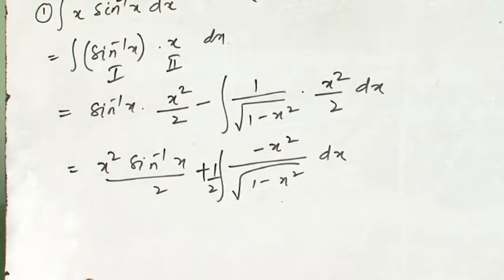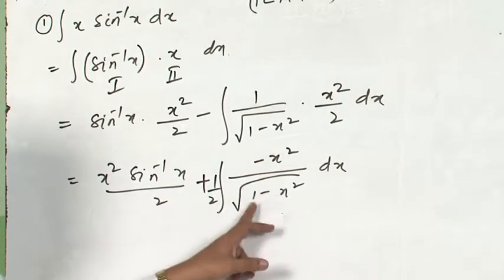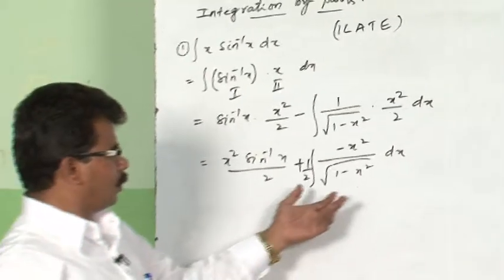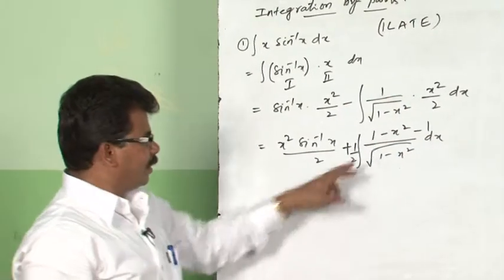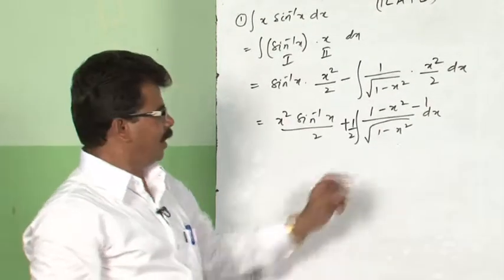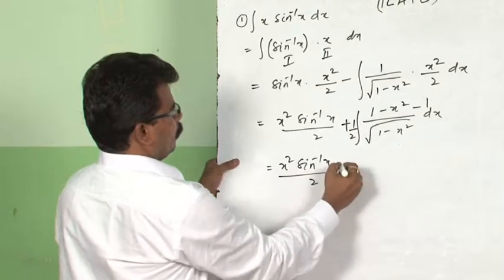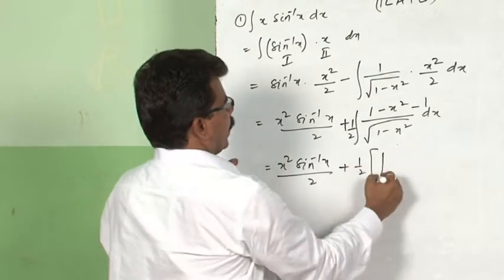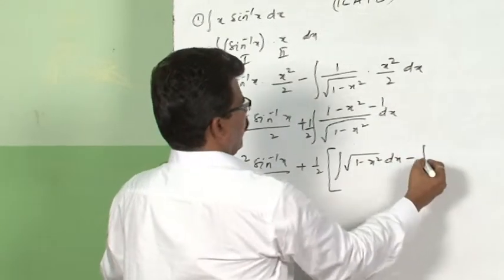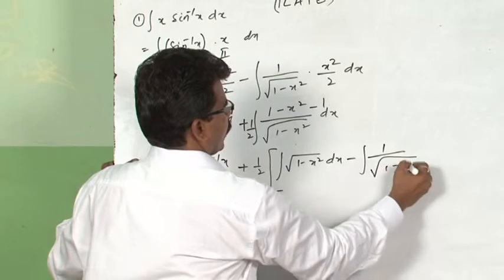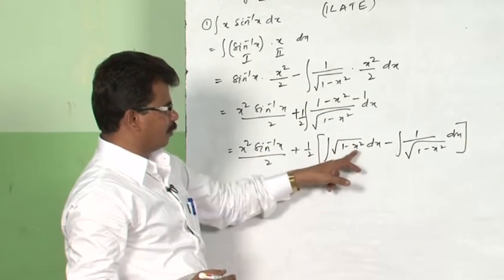Now I will add and subtract 1 in the numerator to manipulate x²/√(1−x²). Writing −x² = 1−x² − 1, this becomes (1/2)∫[(1−x²)/√(1−x²) − 1/√(1−x²)]dx = (1/2)∫[√(1−x²) − 1/√(1−x²)]dx. These two integrals are separated.